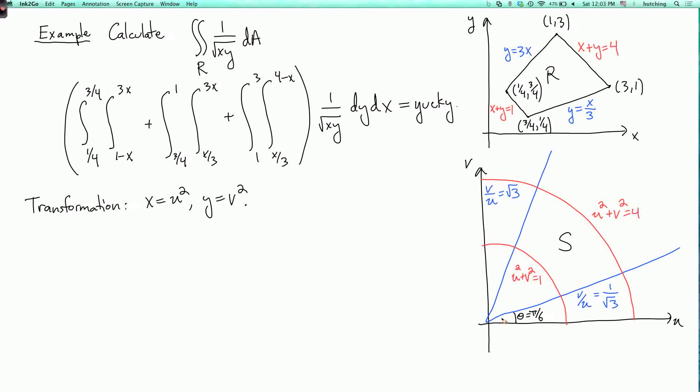And then this other line here, this is where theta equals 2 pi over 6, or pi over 3. And the tangent is the square root of 3. Okay.